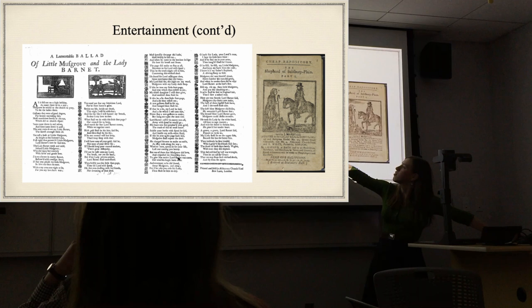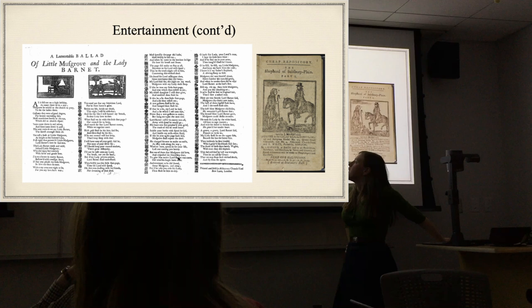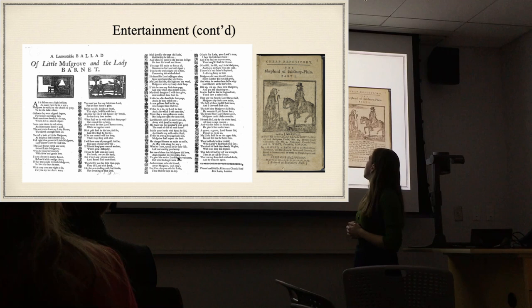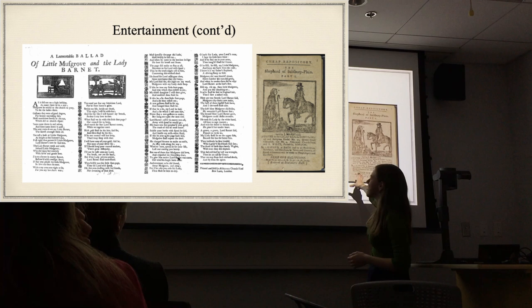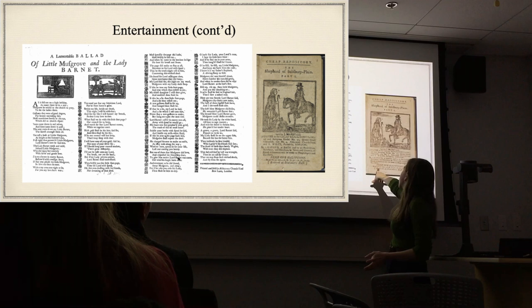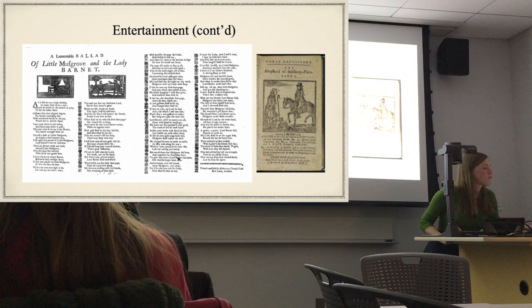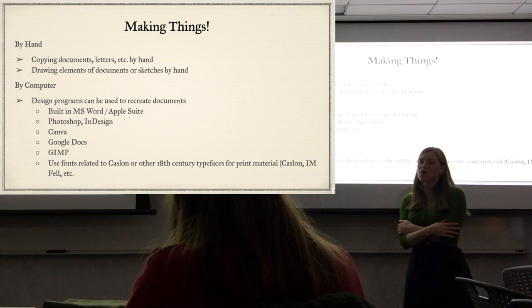Here are a couple of examples of broadsides. One is from the mid-18th century, printed in London on a larger piece of paper, printed on both sides. The other is part of a chapbook from the early or late 18th century. The price is one half penny, so they were pretty cheap - smaller than a lot of other printed material.